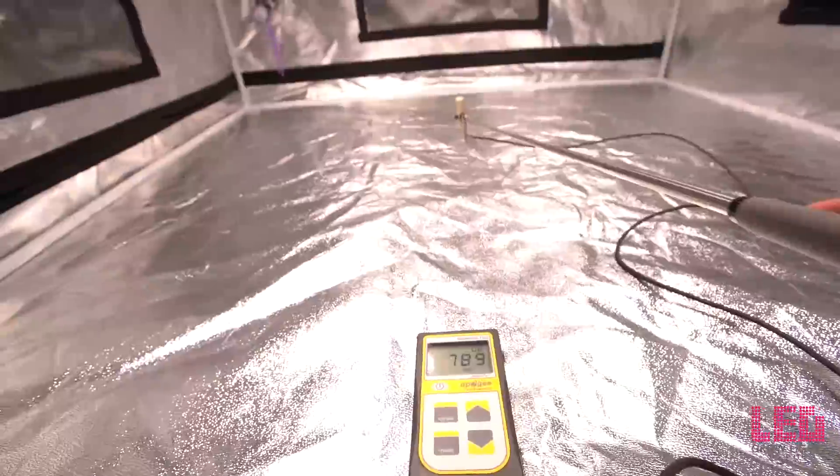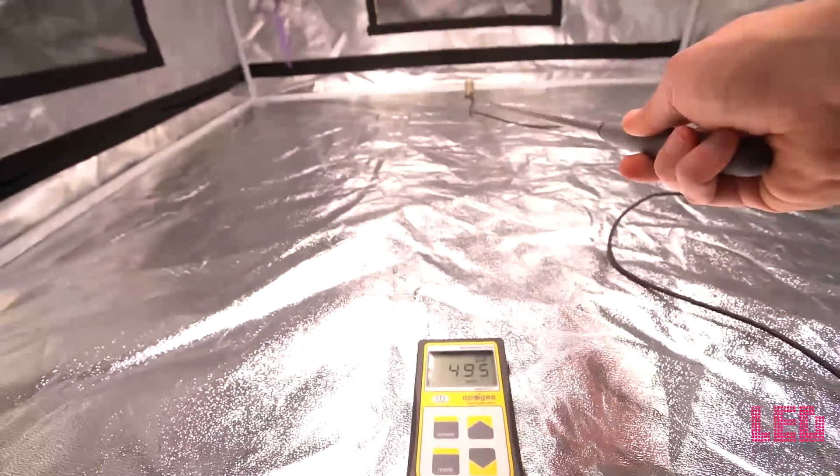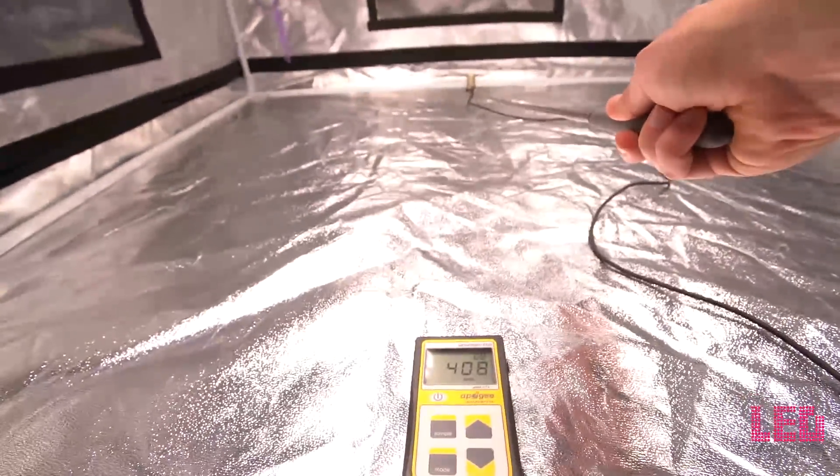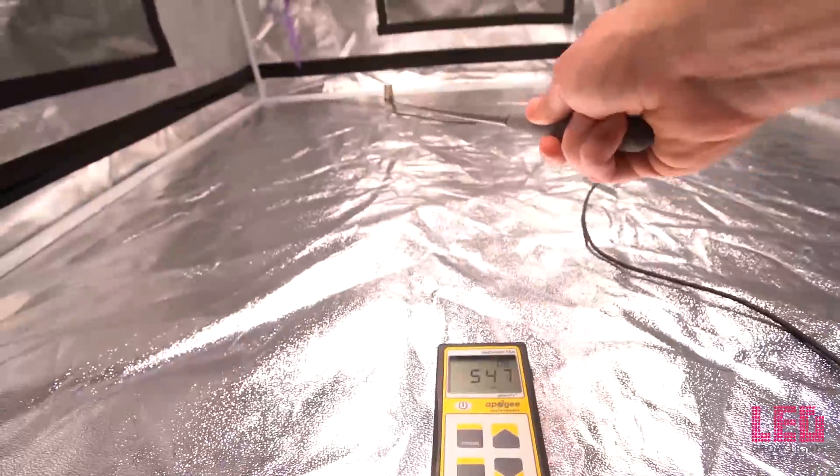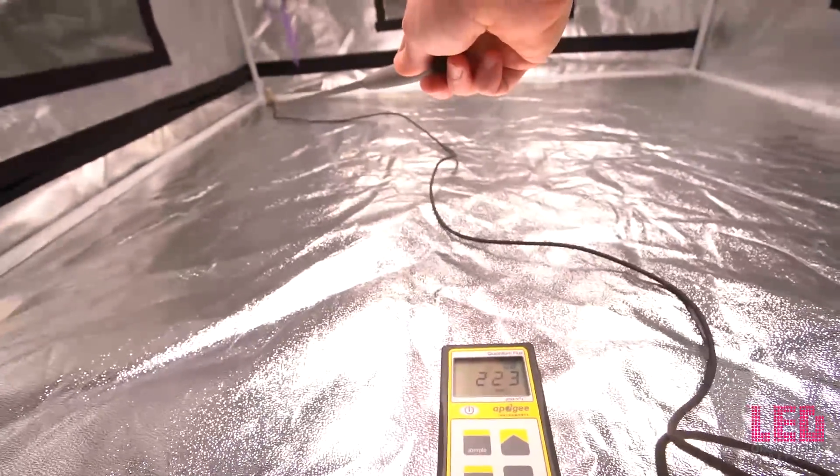In the center at two feet and just over 800. Back the tent looks like 400 PPFD. Corner of the tent about 225 and the other side about 400 PPFD.